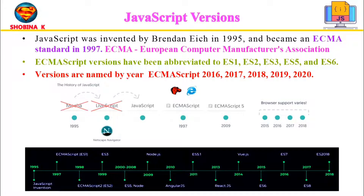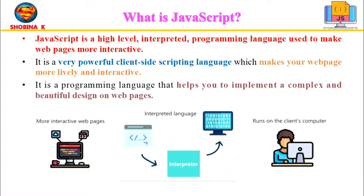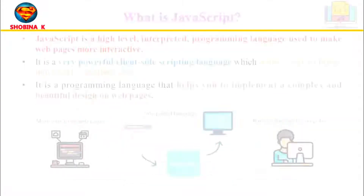Now let's get into the details of what JavaScript is. JavaScript is a high-level interpreted programming language used to make web pages more interactive. In simple terms, JavaScript is the language of the web. It is used to make the web look alive by adding motion to it — it lets you implement complex and beautiful things on web pages.